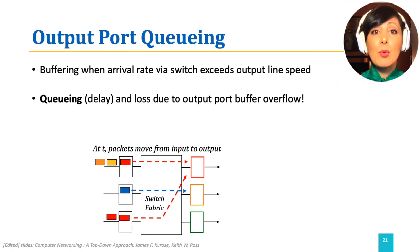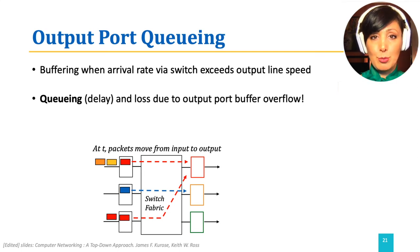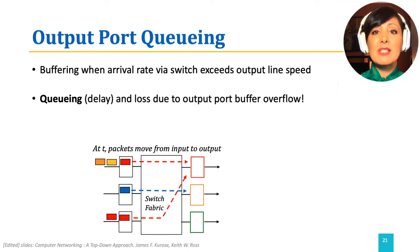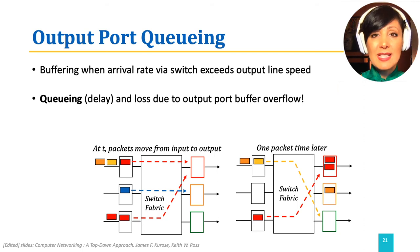Queuing at the output port happens when datagrams arrive from the fabric faster than the transmission rate — that is, when the switching fabric is faster than the port's line rate. This also makes it possible to switch packets to the same output port. For example, as shown in the figure, at time T two red packets are moved from different input ports to the same output port. The first packet transferred to the output port could be queued, then the second packet has to wait for another step before packet one can go out of the output port and make the line available.